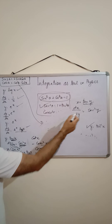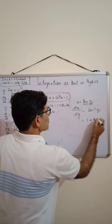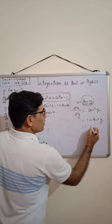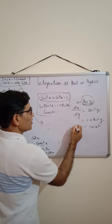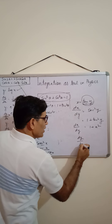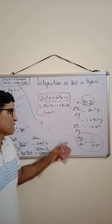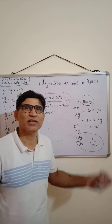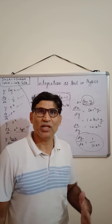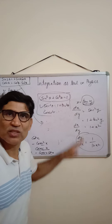Going back to the tan inverse derivation: sec²y becomes 1 + tan²y = 1 + x², confirming dy/dx = 1/(1+x²). These formulas are very important because when we apply integration by parts later, differentiation will be very useful. So first revise all this differentiation — now I will start integration.